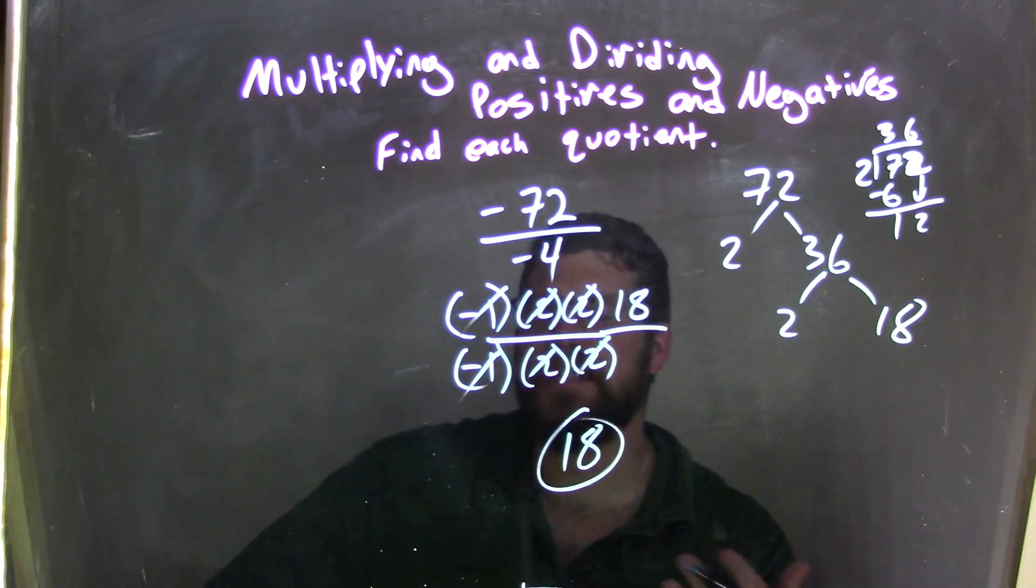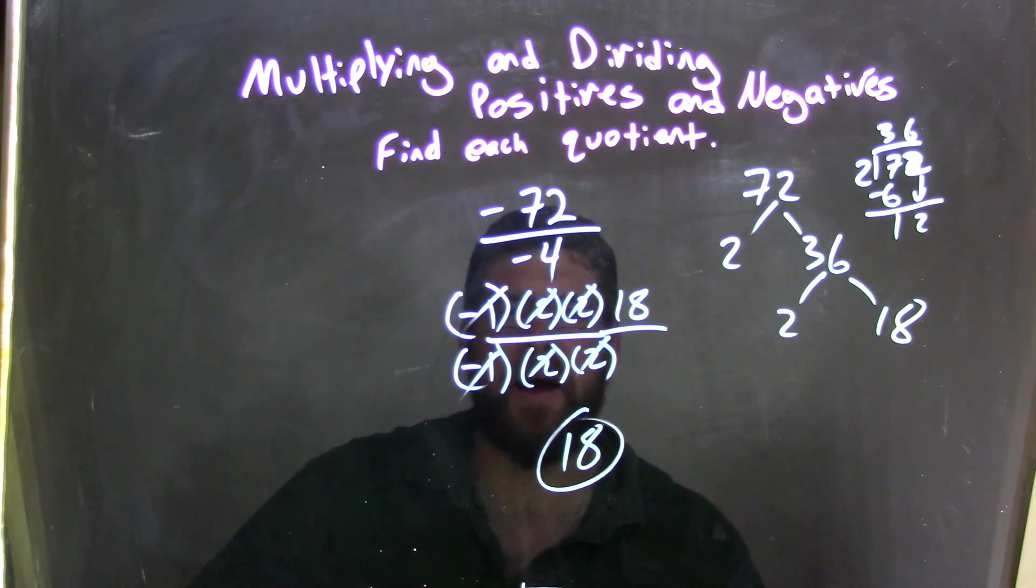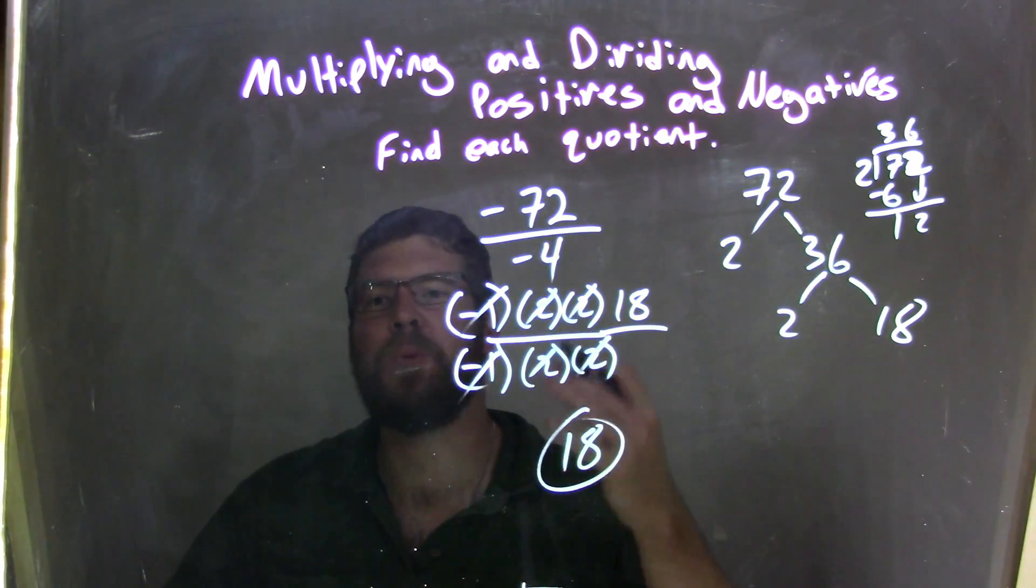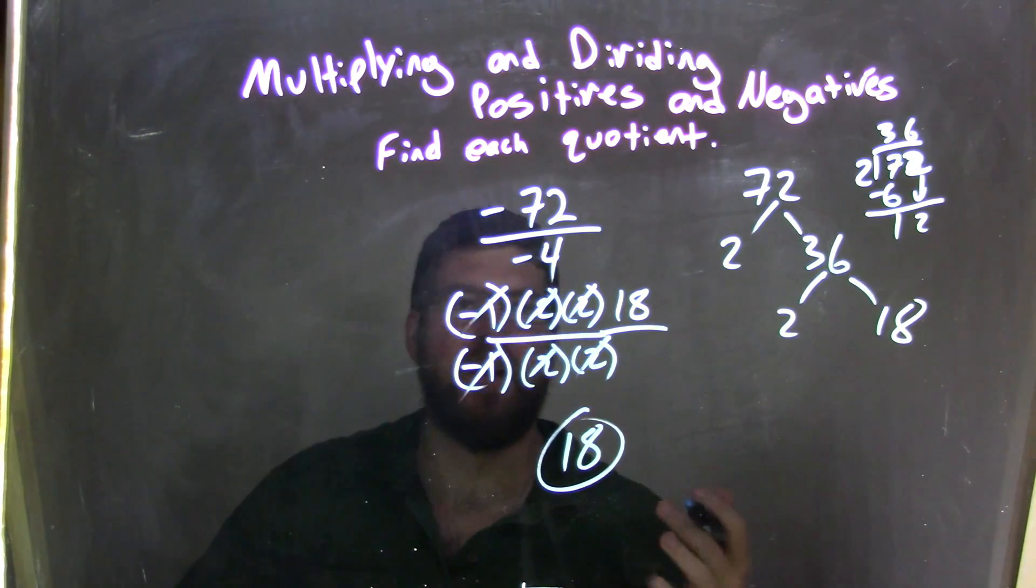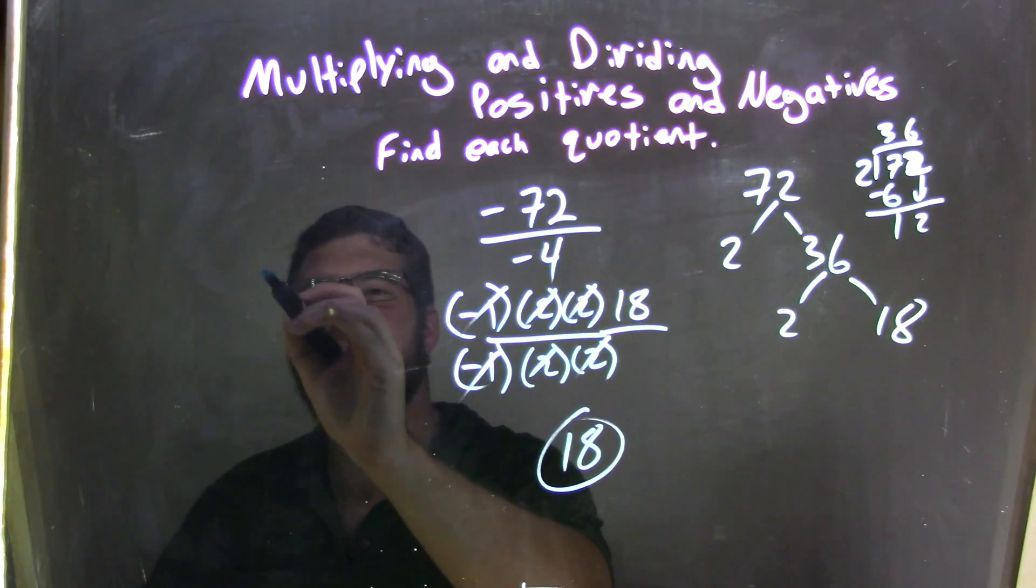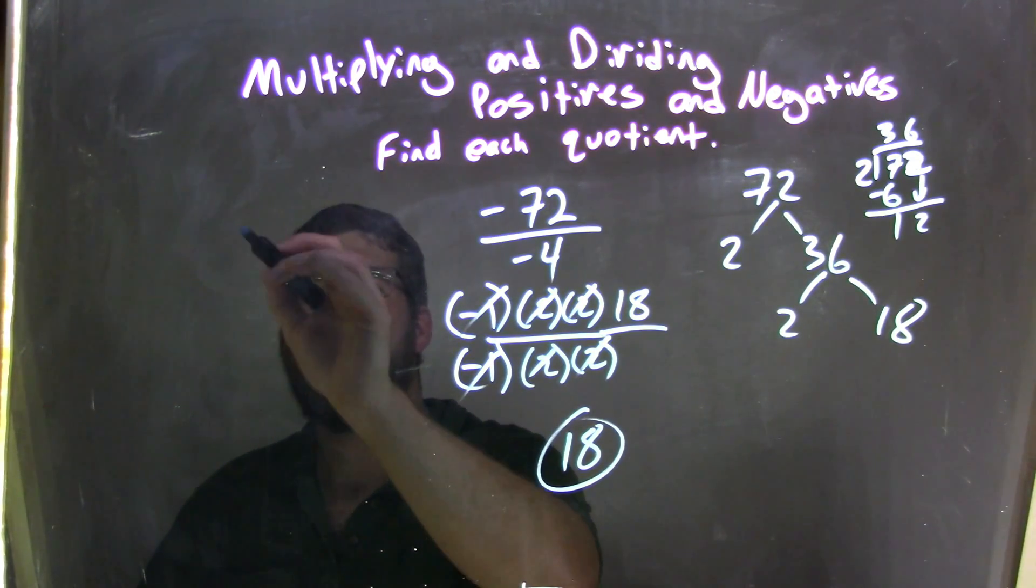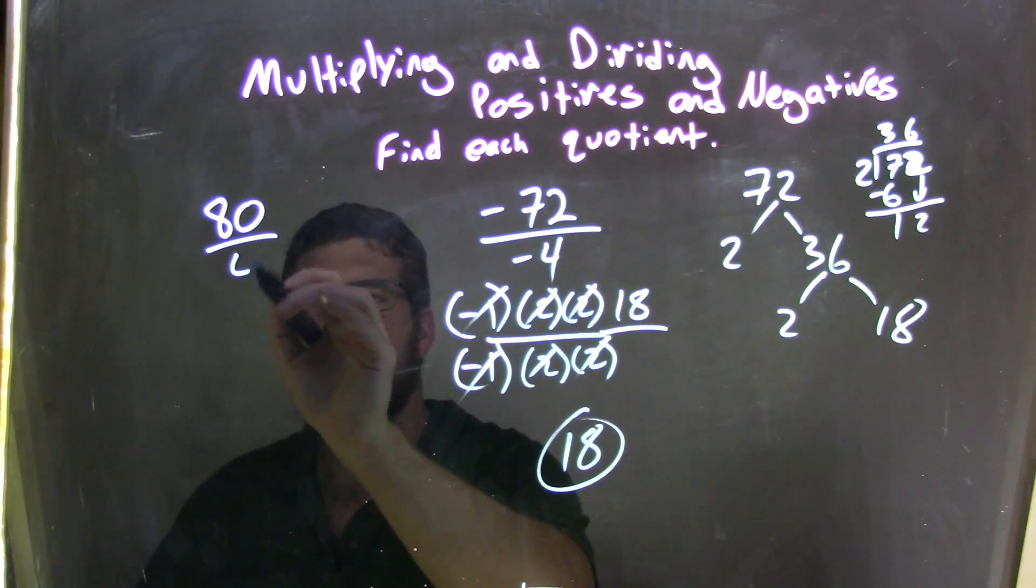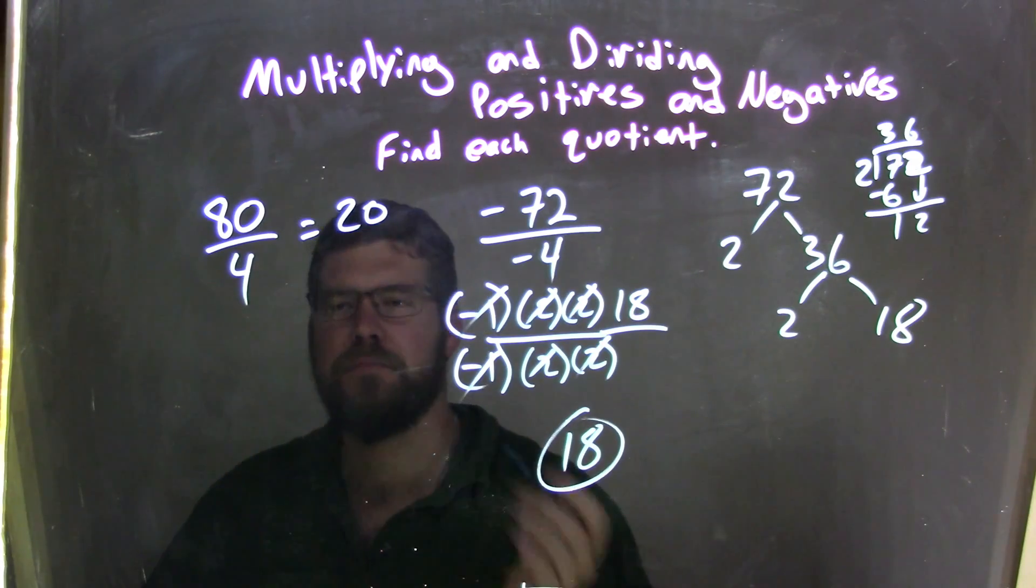But if we wanted to practice doing this in our head, that's the kind of way I do it. I look at this and say, 4 into 72, I don't know that off the top of my head. But I know 4 goes into 80 evenly. 4 goes into 80 twenty times, right, 20 times 4 is 80. So I think about, if 4 goes into 80 twenty times...